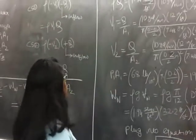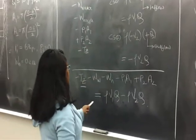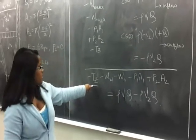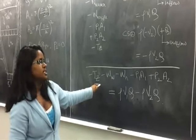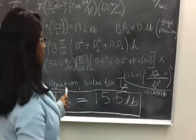Then we plug all of these into this equation. The weight of the nozzle was given to us. So the only thing left we have is what we're solving for, which is the reaction in the vertical direction, which we found right here to be 15.5 pounds.